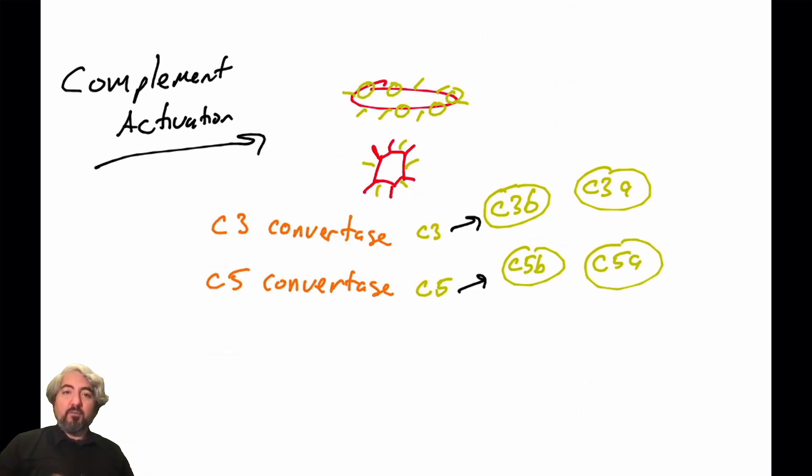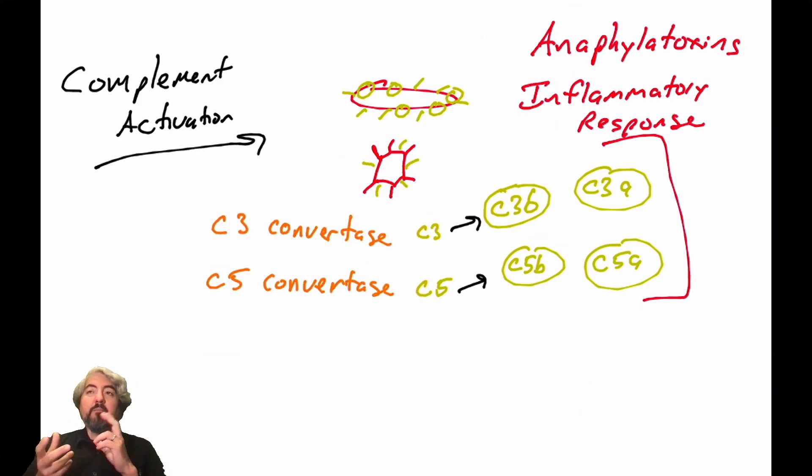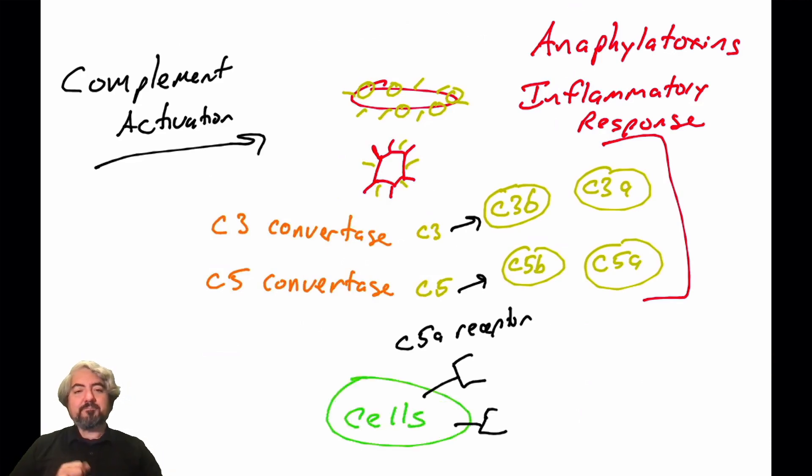When C5 convertases form, they will act upon C5, cleaving C5 into C5A and C5B. We talked about in a previous video how C5B initiates the formation of the membrane attack complex that will help destroy pathogens. But we didn't talk about C3A and C5A. What do they do? It turns out they are very potent inducers of inflammation. We call these small proteins anaphylatoxins because they trigger an inflammatory response. C5A is the more potent of the anaphylatoxins. When complement becomes activated, that's going to lead to the production of C5A and C3A.